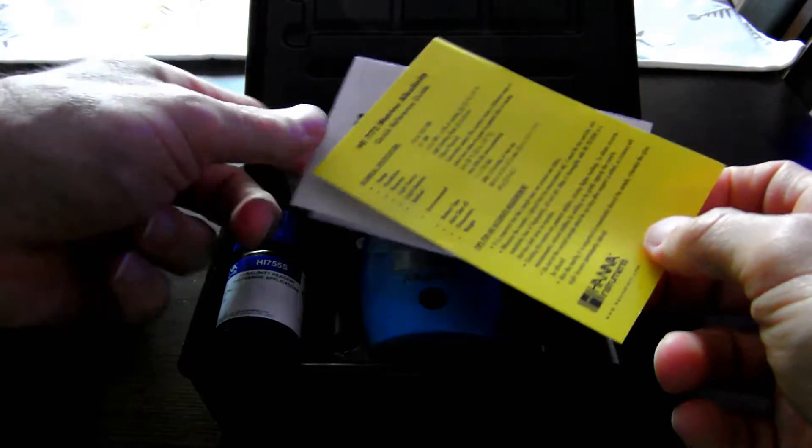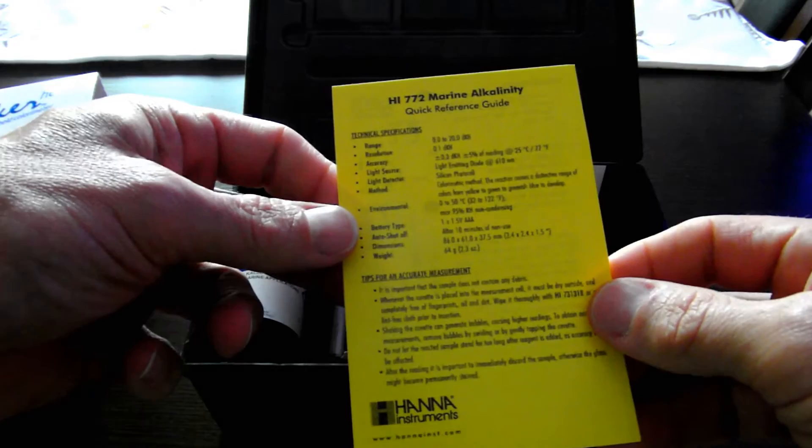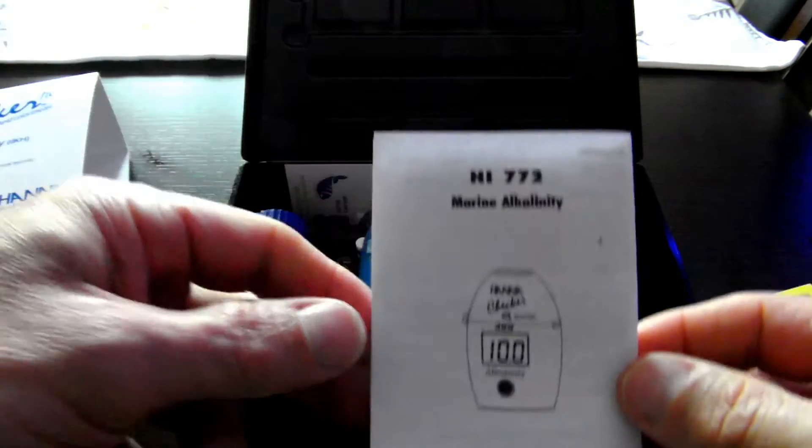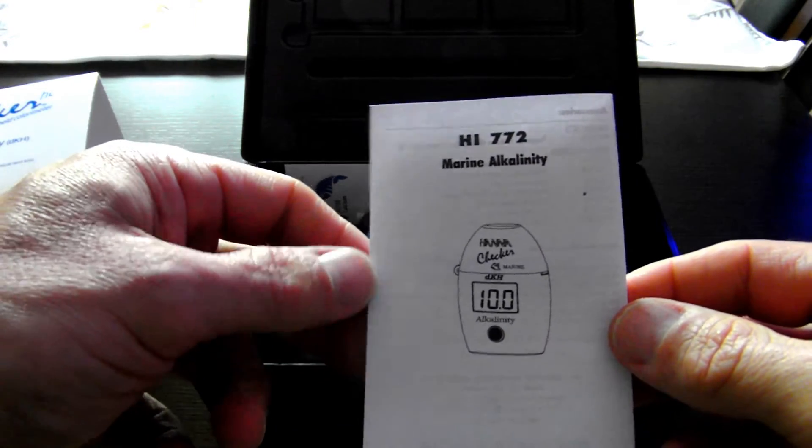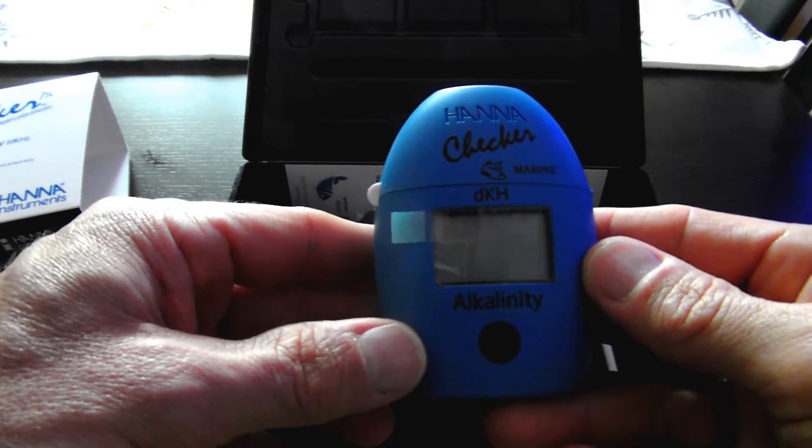We've got some literature here, a quick reference card or guide, marine alkalinity information, a little booklet. Here's the gadget itself, the Hanna Checker.